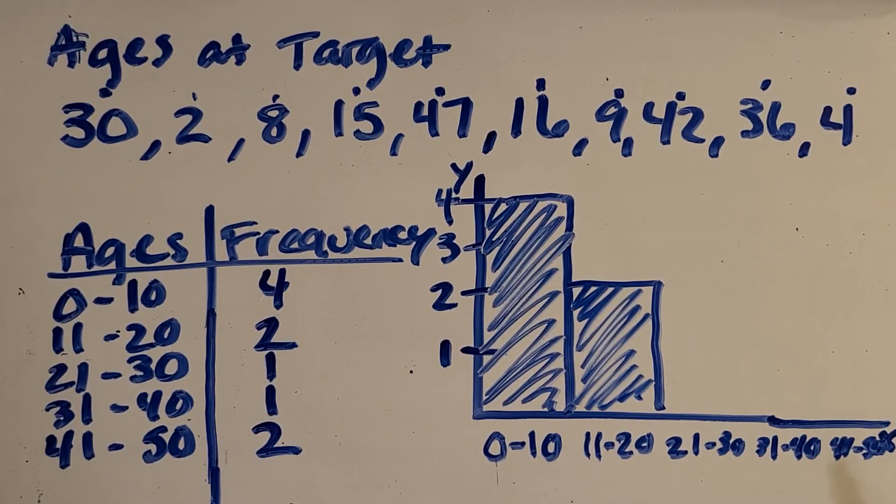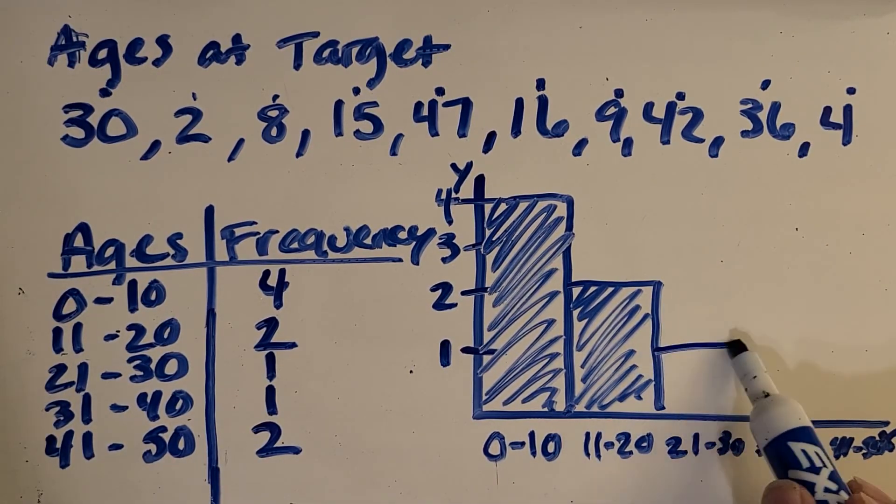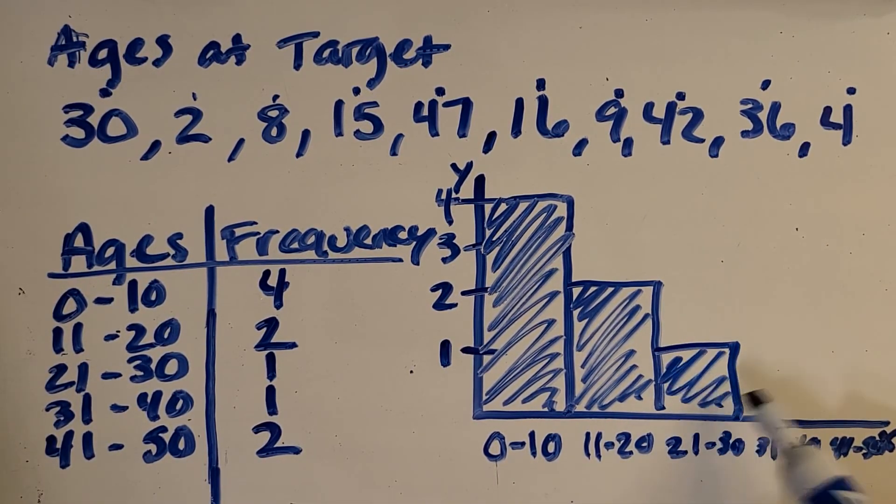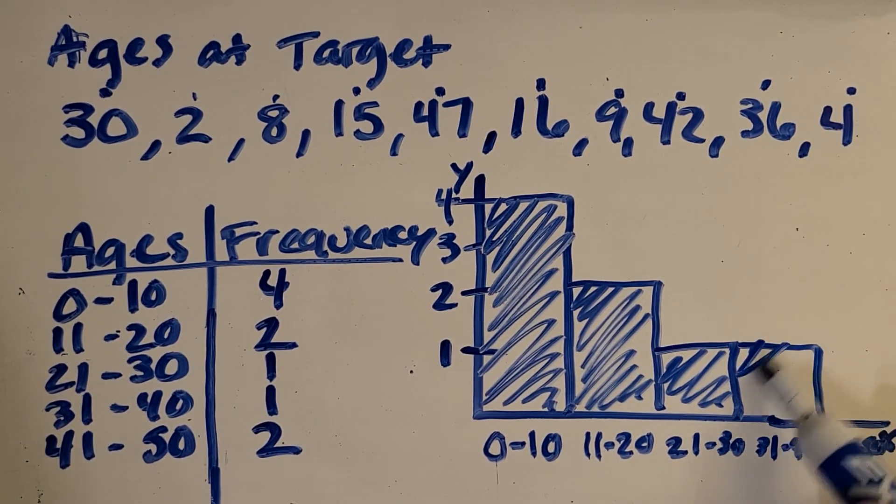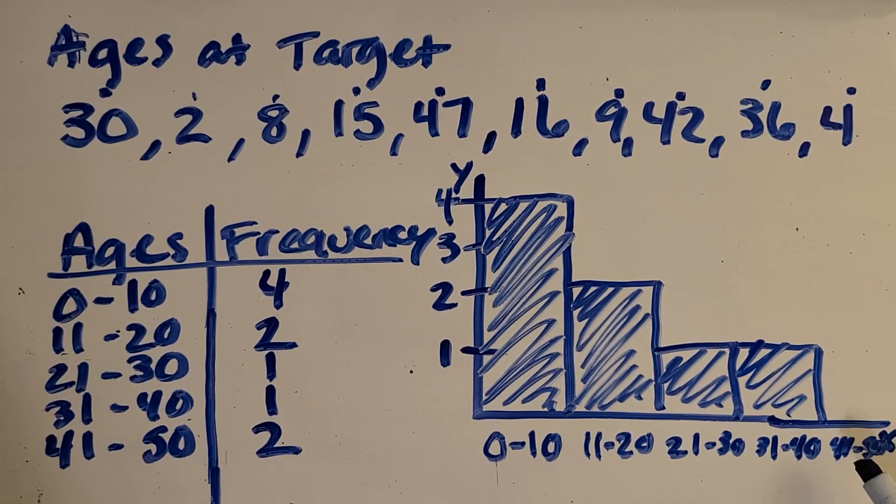21 to 30. There's a 1. 31 to 40 is another 1. And then 41 to 50. Good job, is a 2.